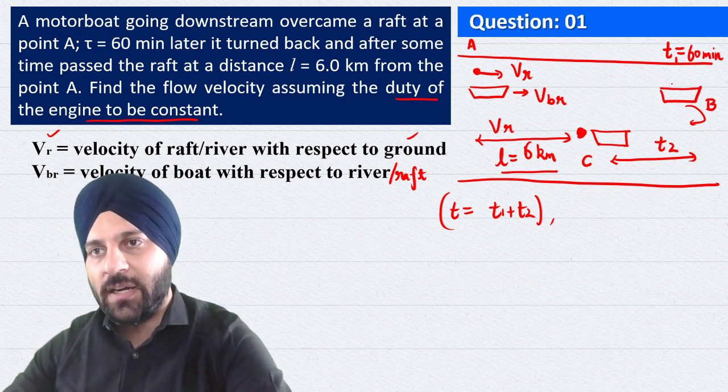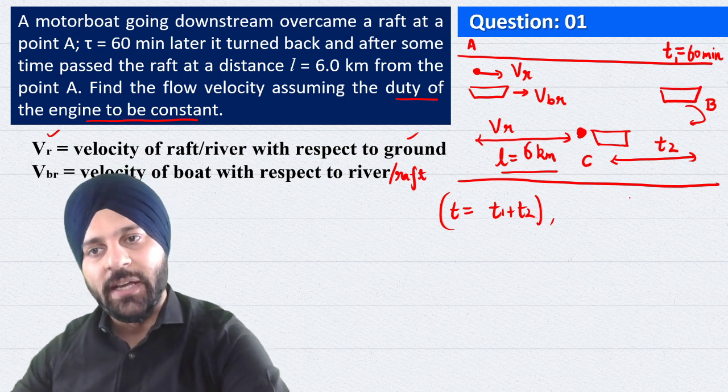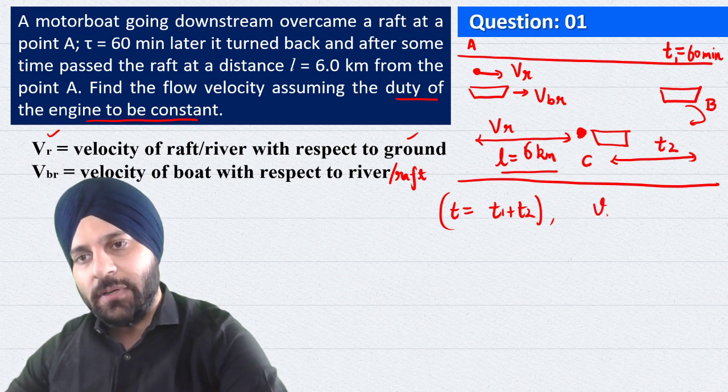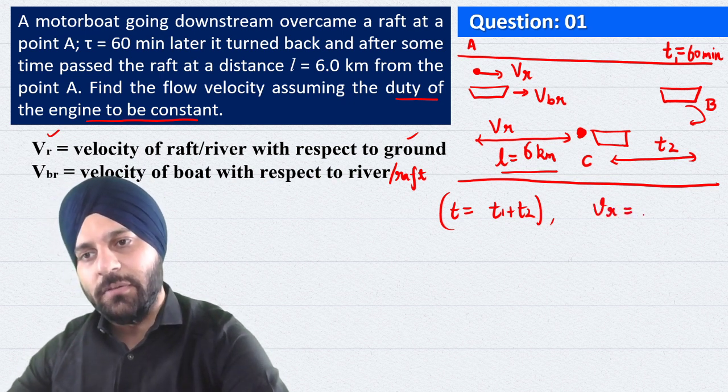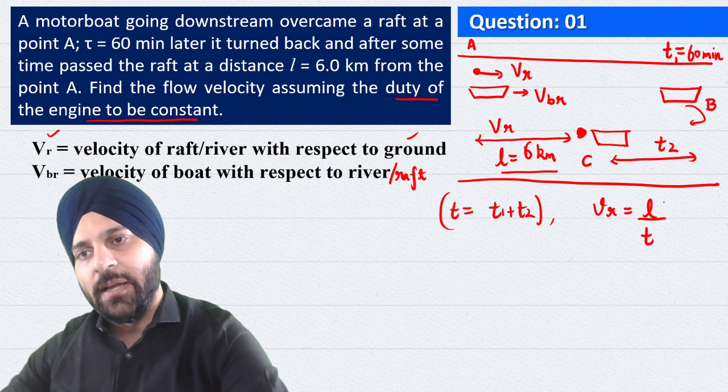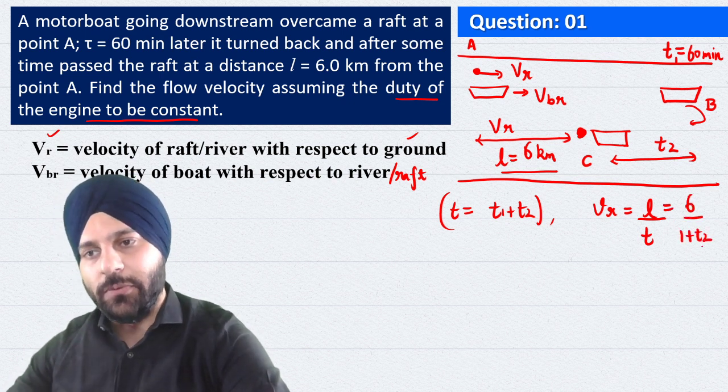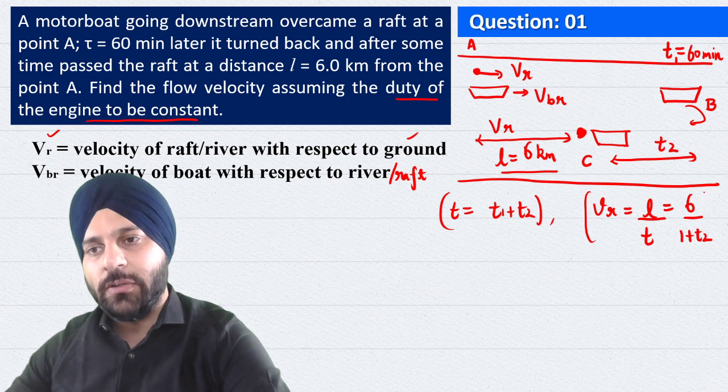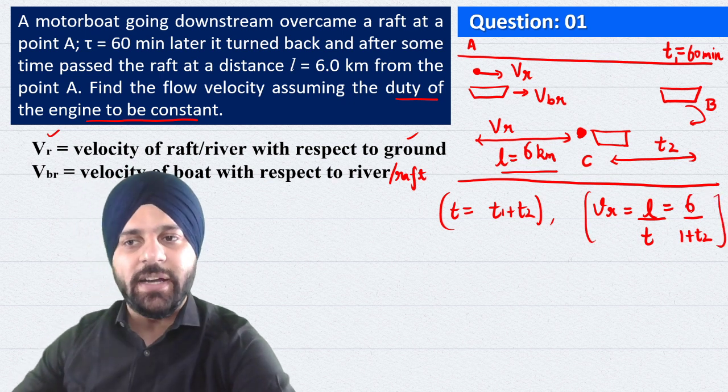Where T1 is 1 hour, but T2 hame calculate karna hai. Hum simply likh sakte hai velocity of river ya raft is equals to L divided by T, matlab 6 divided by 1 plus T2. Agar hame T2 mil gaya to phir hum is question ko solve kar chuke hai kyunki hame river ki velocity hi nikalni hai.